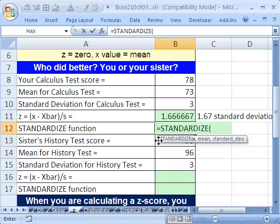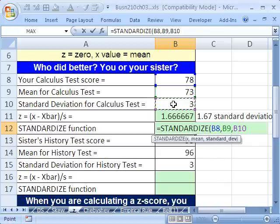But there is a function, standardized, and the screen tip is kind of polite. It says it wants an x, so I'll click on the particular value, comma, and then it says, give me the mean. I'll give it the mean, comma, and the standard deviation. I'll give it the standard deviation.